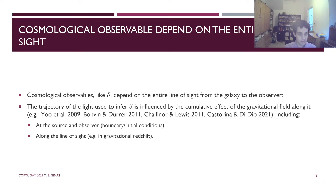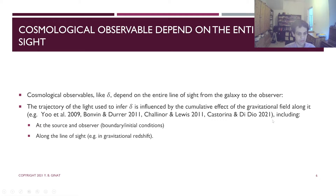The galaxy overdensity delta depends on the line of sight, observer terms, source terms, and quantities that are integrals along the line of sight, such as gravitational redshift. It has been computed with projection effects by the authors cited here and others. I'm going to describe a way to calculate it differently.